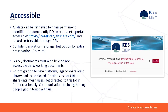All data can be retrieved by the permanent identifier, so it means it's accessible. In our case it's predominantly DOIs. The portal is accessible via URL — Figshare is the platform that we use, and they have a very open API, so we can also retrieve records that way. We have platform storage through them. They are pretty foolproof, and they also have an option for extra preservation through the Archivum system if we wanted it. We haven't made any decisions about that yet, but maybe in the future.